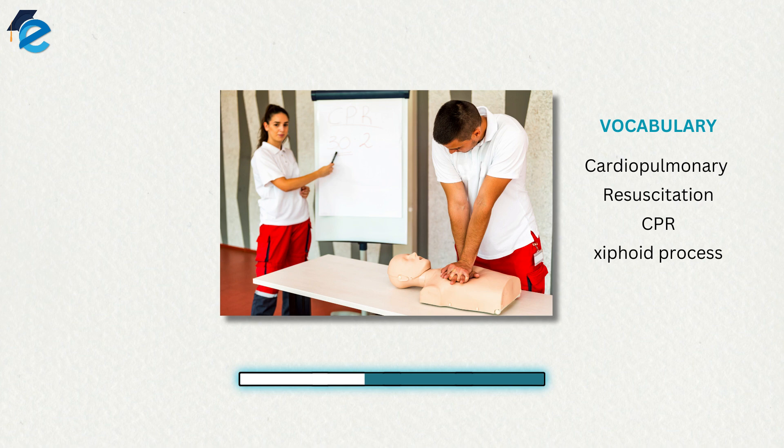Current standards call for compression of the chest at least five centimeters deep and at a rate of 100 compressions per minute. At this stage, the emphasis is on performing high-quality chest compressions rather than providing artificial respiration.